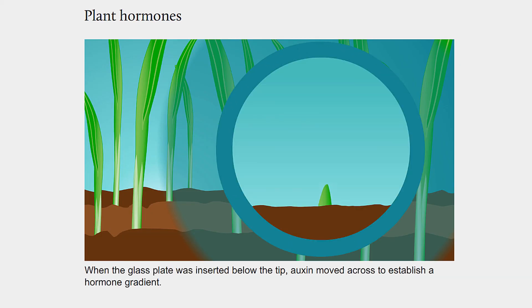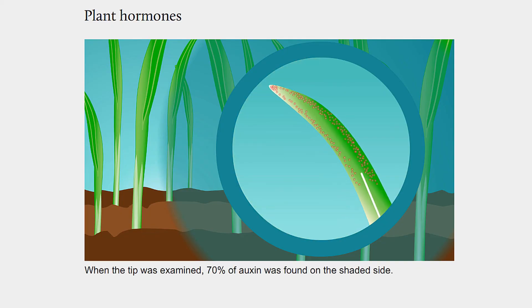When the glass plate was inserted below the tip, auxin moved across to establish a hormone gradient. When the tip was examined, 70% of auxin was found on the shaded side.